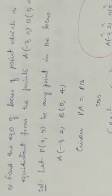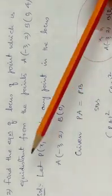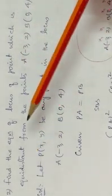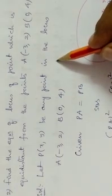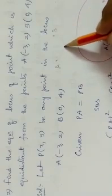Very simple problem. Now one more problem, the second problem in the first Roman. Find the equation of locus of point P which is equidistant from the points A and B.